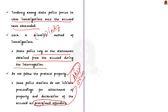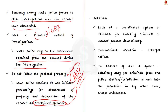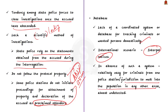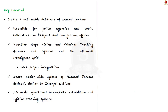The next issue discussed by the author is the lack of a coordinated system or database for tracking criminals or wanted persons domestically. In the international scenario, we have such a database — for example, Interpol notices — but we do not have such a system at the domestic level. In the absence of such a system, it becomes easy for criminals from one police station or jurisdiction to melt into the population in any other area almost undetected. We need to create a nationwide database of wanted persons, accessible to police agencies, public authorities like passport and immigration offices, and other law enforcement offices. Only by creating such a nationwide database can we overcome these hurdles and expedite justice delivery.